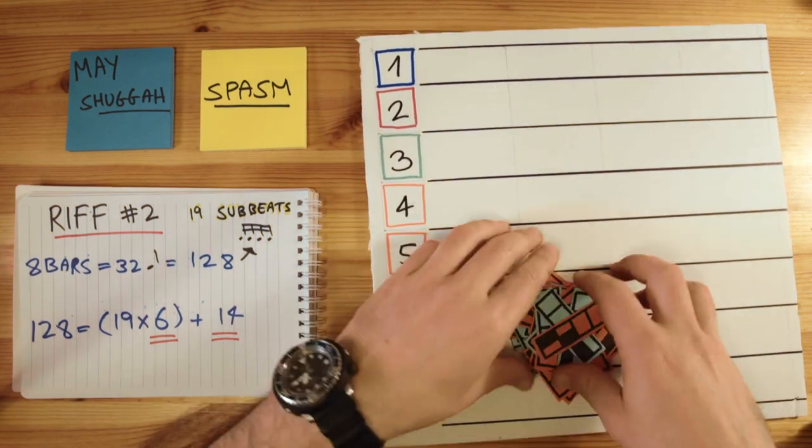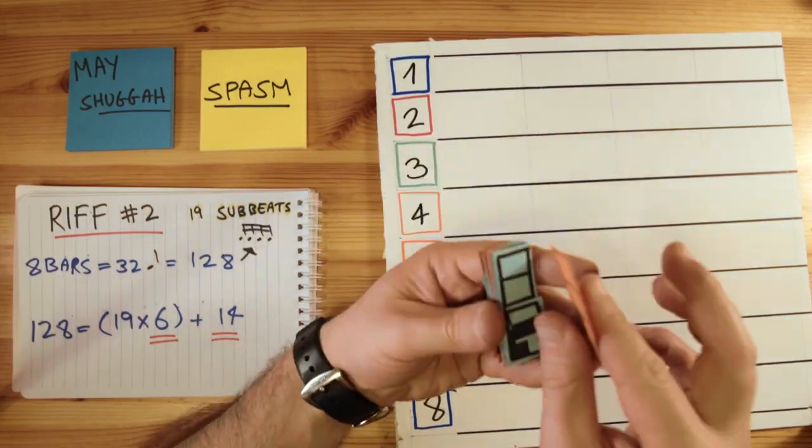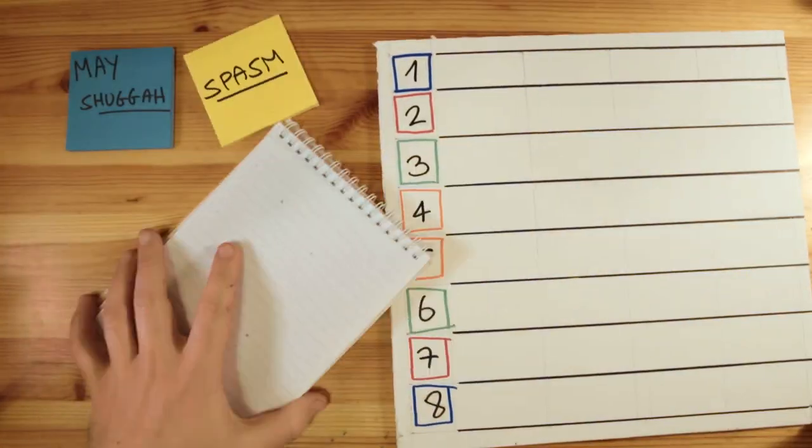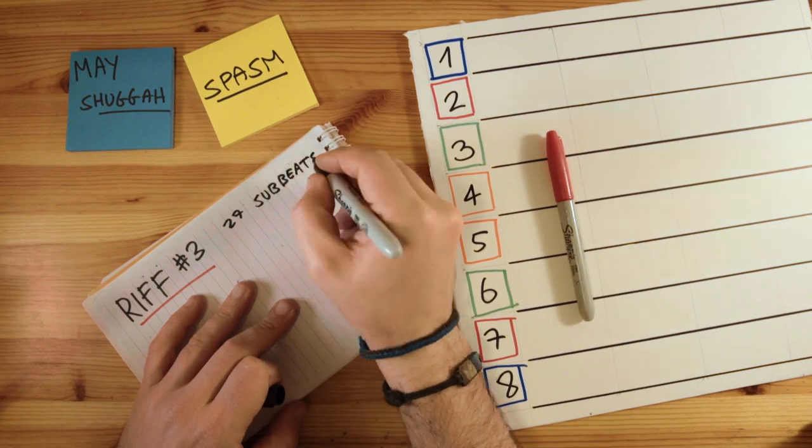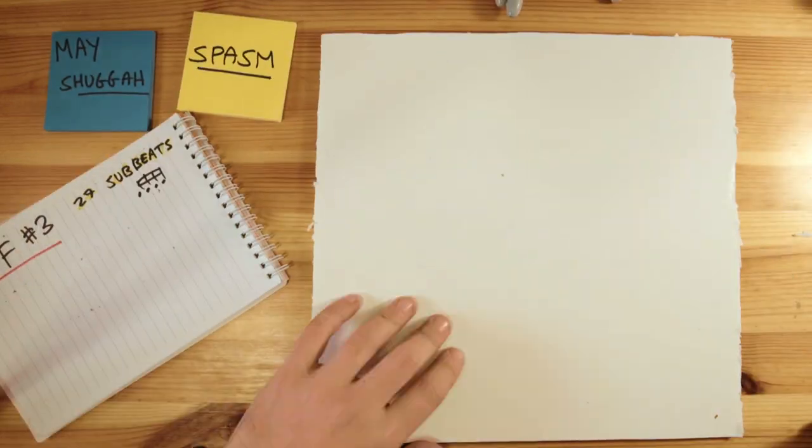The last 8 bar riff we have is the riff behind the guitar solo. This riff is 27 sub-beats long, holy shit, and it looks like this.